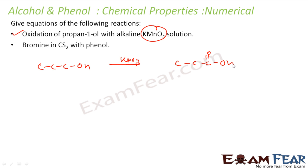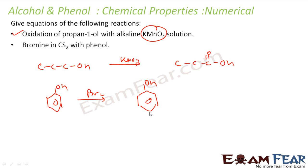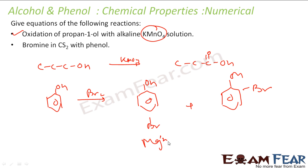The next reaction is bromine with phenol. Using Br2, substitution occurs at the ortho and para positions, with the ortho product being the major one. We have learned this reaction several times.